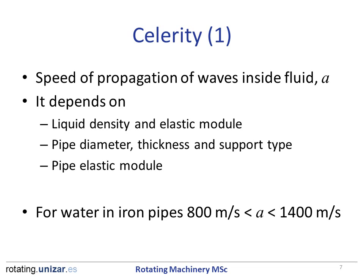The speed of propagation of waves inside a fluid is also called celerity. It depends on the liquid density and its elastic modulus, the pipe diameter, thickness, and support type, and the pipe elastic modulus. For example, for water in iron pipes, it is something between 800 meters per second and 1400 meters per second, depending on the pipe characteristics.